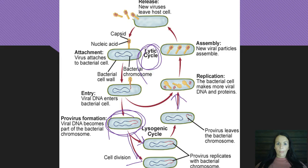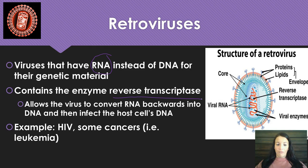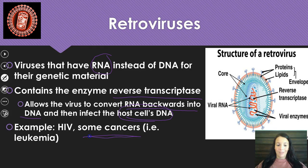Retroviruses are different because they kind of work backwards. The biggest difference is they have RNA instead of DNA, and they have an enzyme called reverse transcriptase. Most of the time RNA is made from DNA, but in this situation the DNA has to be made from the RNA. It converts that RNA backwards into DNA, and that DNA is what infects the host cell's DNA. Examples include HIV and some cancers like leukemia, which are considered retroviruses.